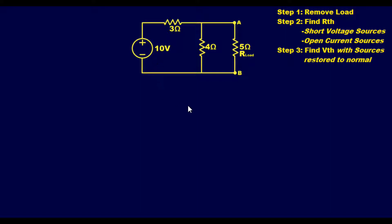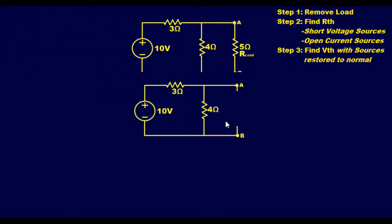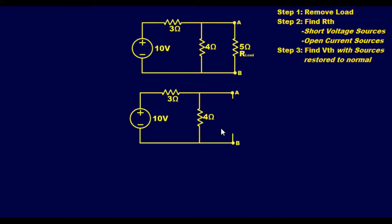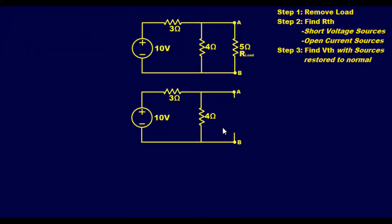Referring to the rules from earlier, the first thing we do is remove the load. So we remove that 5 ohm resistor and the circuit now looks like what we have here — we just erase the load resistance, nothing more. Step one complete.